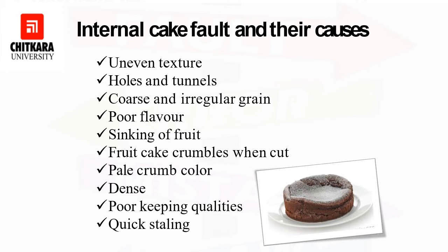Shrinking of fruits to the bottom of the cake occurs when the batter is very thin and there is a lack of structure. Fruit cake crumbling when cut can be caused by weak or wrong type of flour, unbalanced mixing, use of unsoaked fruits, or incorrect baking.